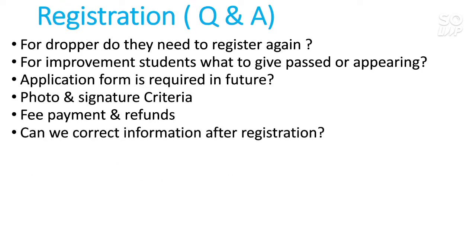Regarding correcting information after registration: first of all, provide your information as correctly as possible. You will have the option to correct it in a correction window that will open two to three days after registration. Try not to make mistakes during registration, but if you do, don't worry — you will have the option to correct it. You just have to be careful about the dates announced for that correction window.